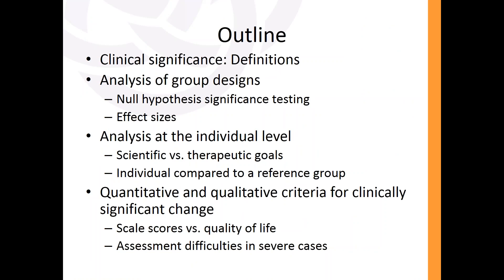What I want to go over first are some definitions of clinical significance, and then compare group designs with the individual level of analysis. With significance testing — specifically what's called null hypothesis significance testing — you're typically looking at a group and not at individuals, concerned about the overall patterns in the group. Within that discussion, there's this issue of effect sizes, which is a corollary to significance testing. This topic provides a segue into clinical significance, because it's all about how big of a difference is taking place.